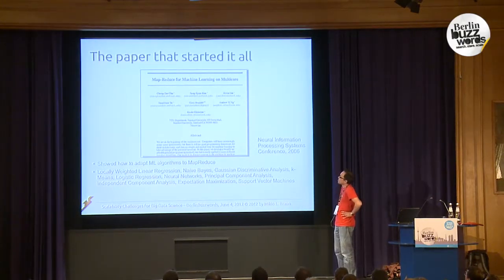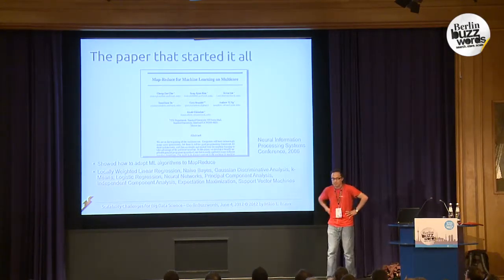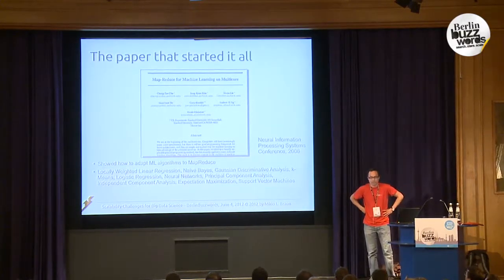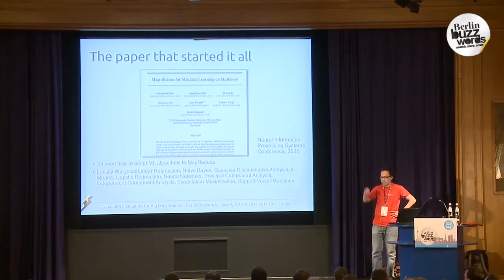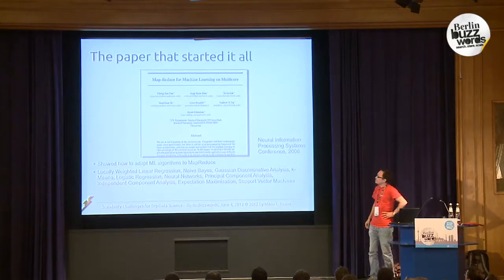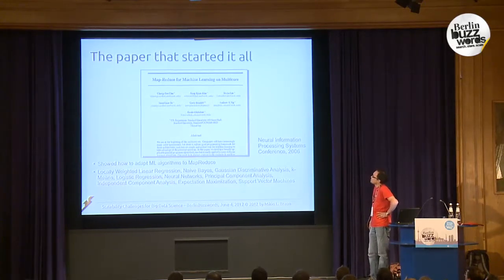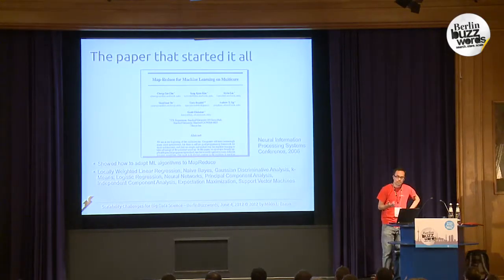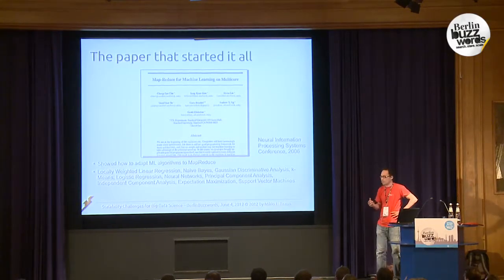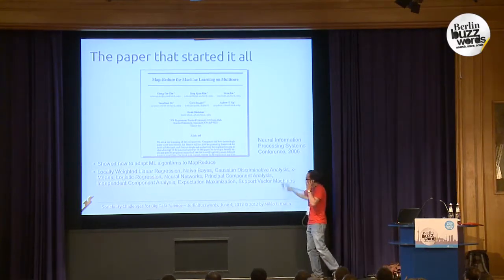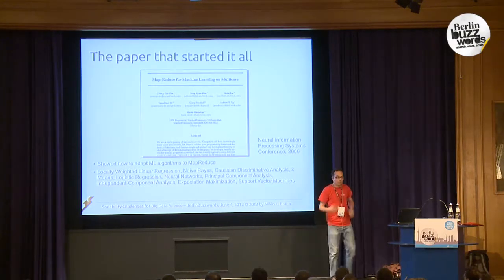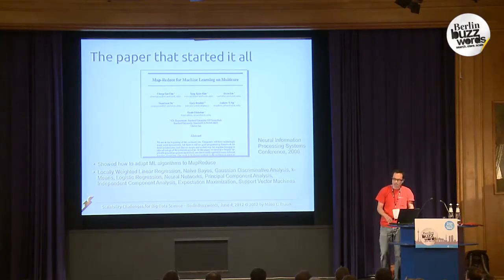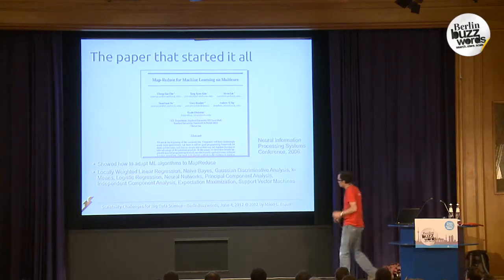MapReduce is very popular in machine learning. There's a paper from 2006 from the NIPS conference — the Neural Information Processing Systems conference, one of the biggest conferences in machine learning — called 'MapReduce for Machine Learning on Multi-Core.' They took the MapReduce idea Google developed a few years before and showed how many algorithms can be formulated as MapReduce very efficiently. Reading it, you think, probably it's easy — it works for all of these algorithms, so practically we're done.